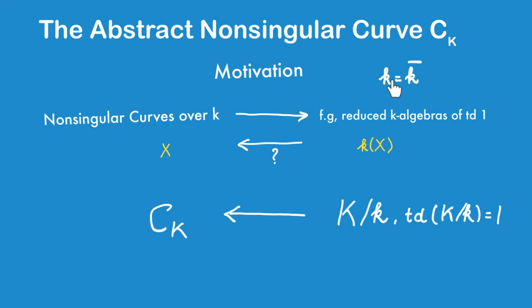So here's our plan. We set an underlying ground field k that is algebraically closed. And given a function field K over k of transcendence degree 1, we want to show that there exists a unique, projective, non-singular curve over k with function field K.